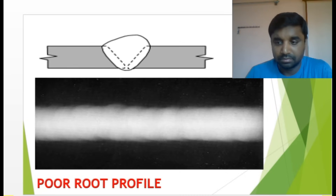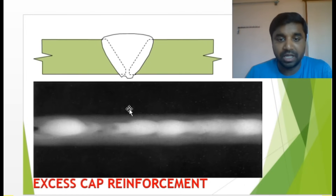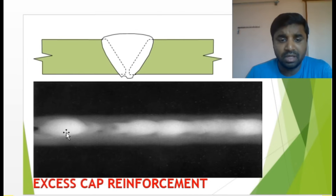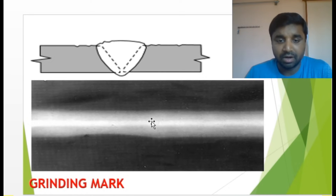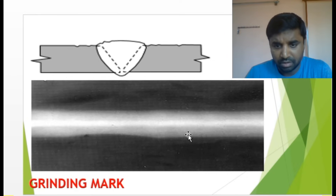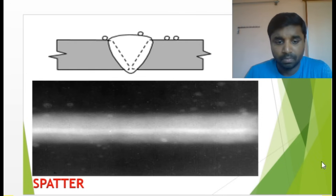Excess cap penetration — if the cap is excessive, one side shows high brightness or white in the radiograph. Some areas are okay and then the excess cap continues. This is also called cap reinforcement. Grinding mark — you can see grinding marks on the parent metal and weld metal; how it looks shows something is happening to the weld quality. Spatter — the spatter on the weld and parent metal is visible, both the weld and surrounding metal are spattered.